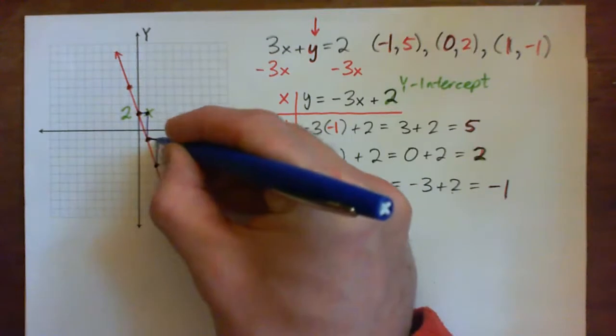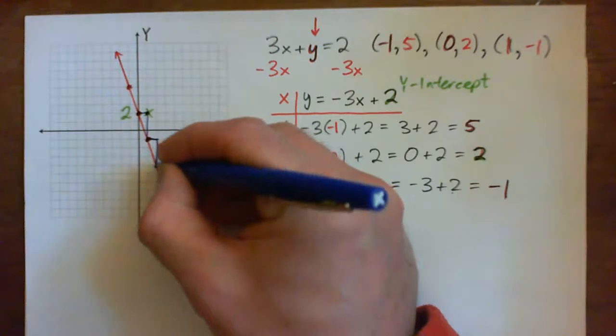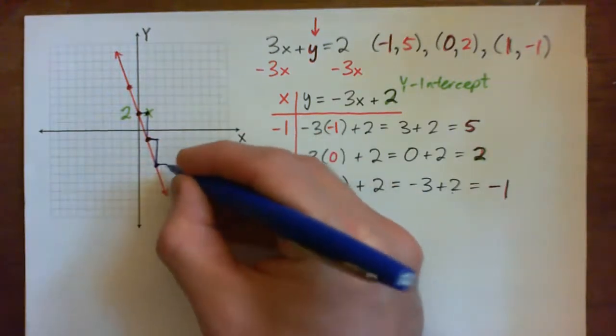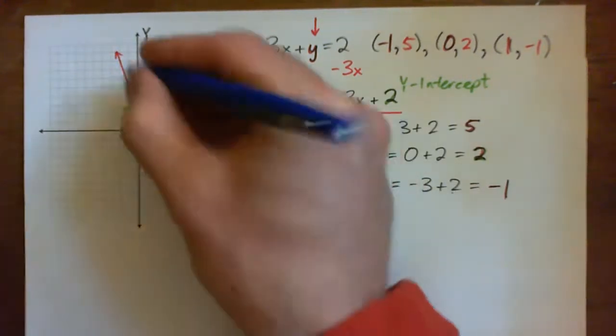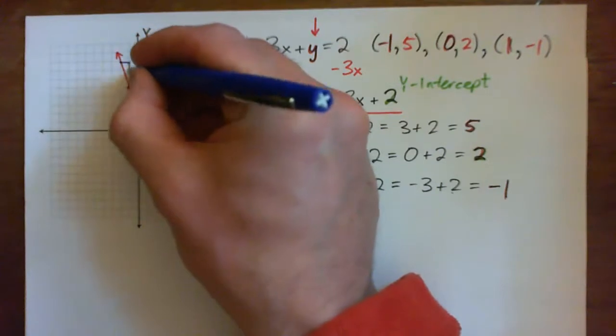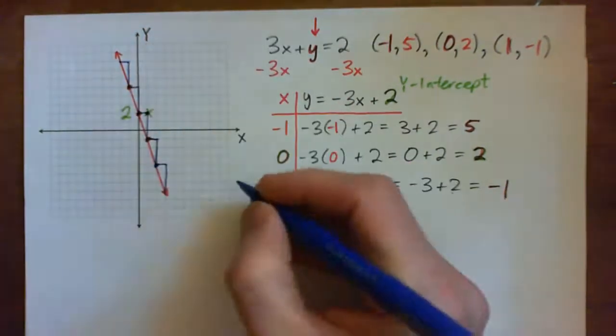So, I can run across horizontally one spot, one unit, and then drop down 3 units. So, I can run across 1 and drop down 3. You know, run across 1, down 3, over 1, down 3. And that gets me to the next point.